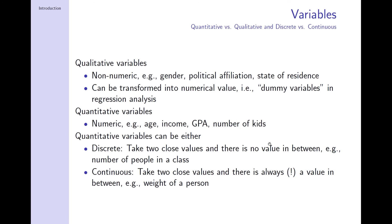Very often it is easier to simply model a variable as continuous even if it seems seemingly discrete. For example, the value of a home is theoretically discrete — you can have a home valued at $200,000 and another at $200,000 and one cent with no value in between — but in practice it may be easier to simply assume we are looking at a continuous random variable.